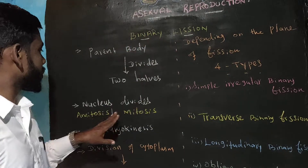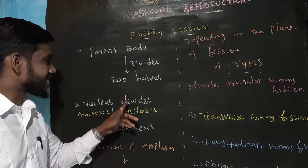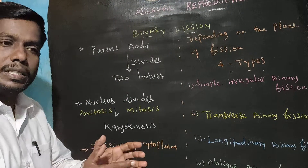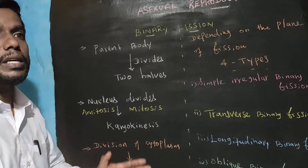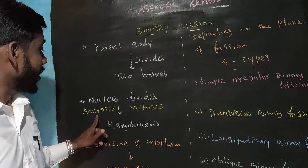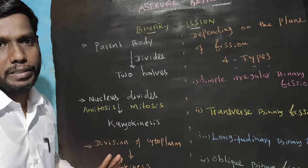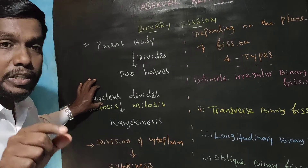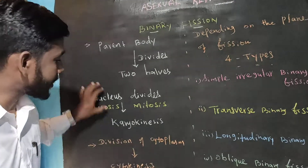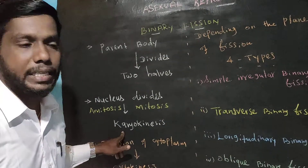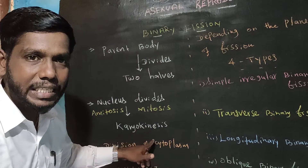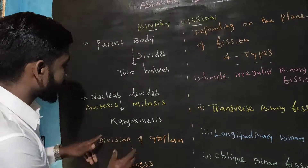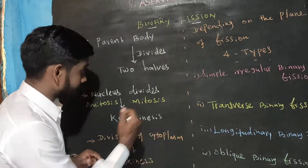In binary fission, the nucleus divides first — whether by mitosis or another method. When the nucleus divides, that process is called karyokinesis. Karyo means nucleus, and kinesis means divide. So nucleus division is karyokinesis.